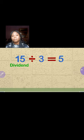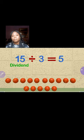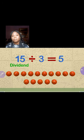The dividend is the number you are dividing. In this example, let's say we have 15 balls — the 15 balls are the dividend. The number three in the problem is called the divisor. This is the number we are dividing by. The divisor takes the dividend and breaks it into smaller groups.